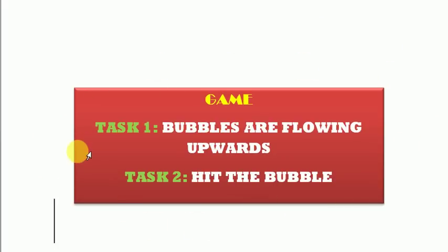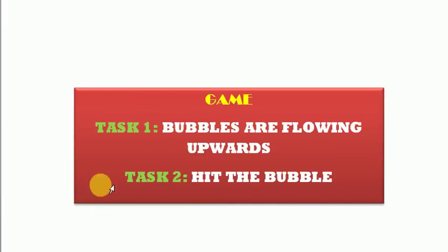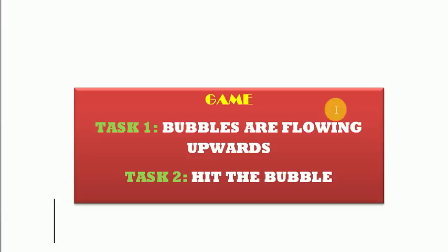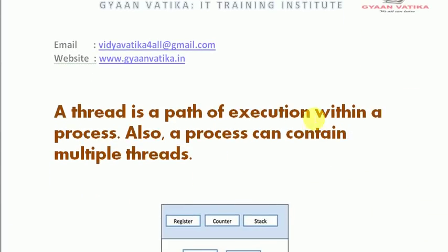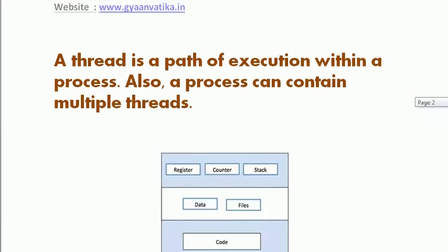In one single process, there can be as many threads as we want. If we want many tasks to be performed simultaneously, we can write the code for each task in different threads. So this one task — bubbles flowing upwards — we will write in one thread, and hitting the bubble we will write in another thread. These two tasks can then be performed simultaneously. So basically a thread is a path of execution within a process, and a process can contain multiple threads.